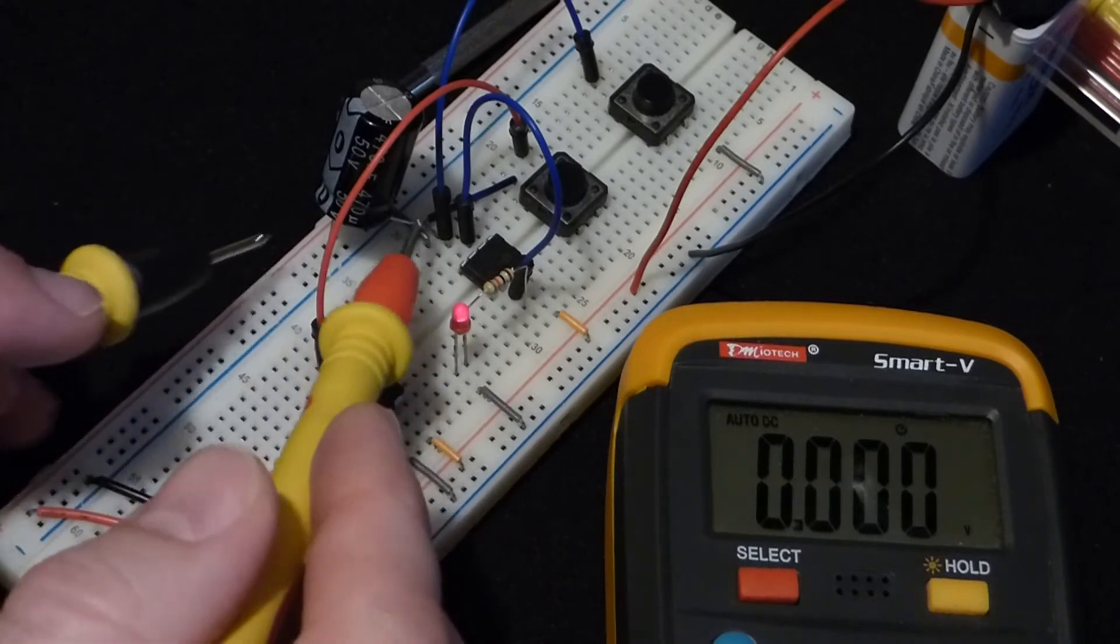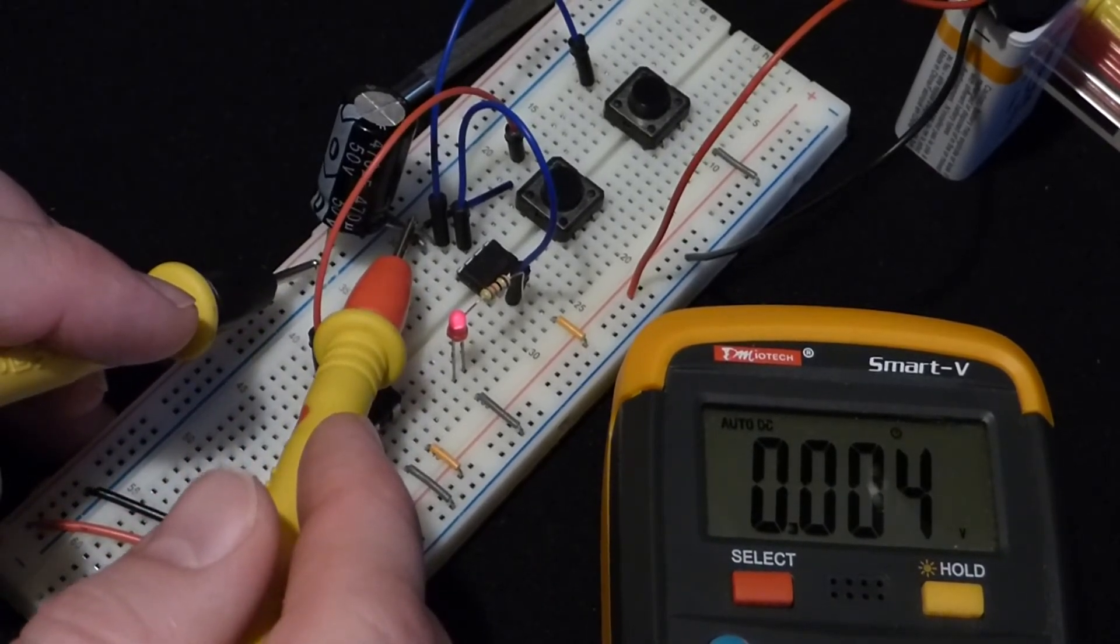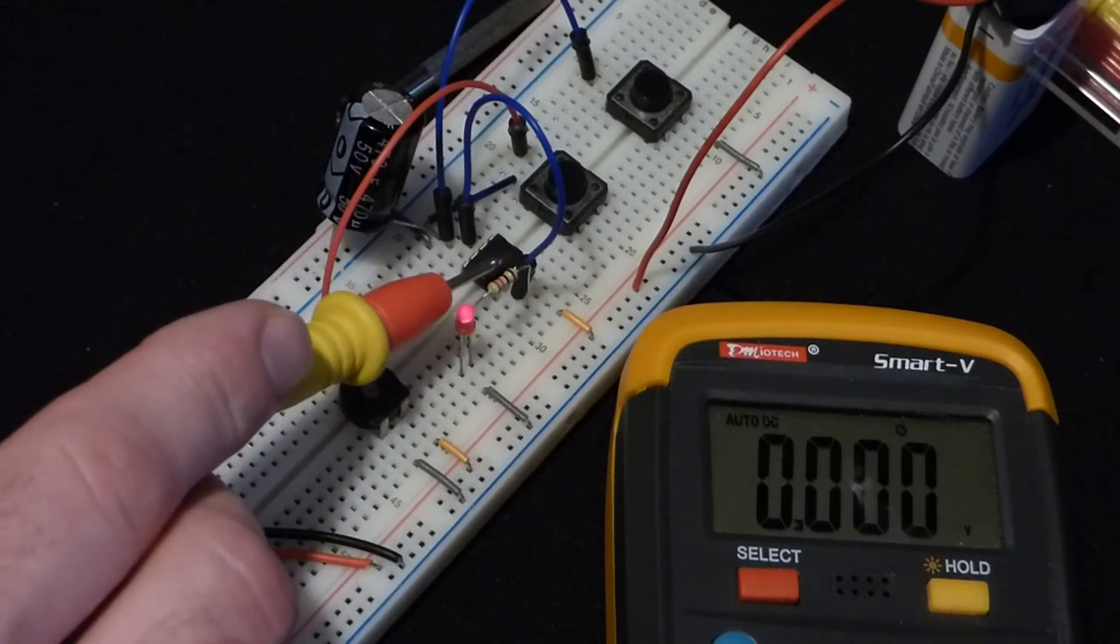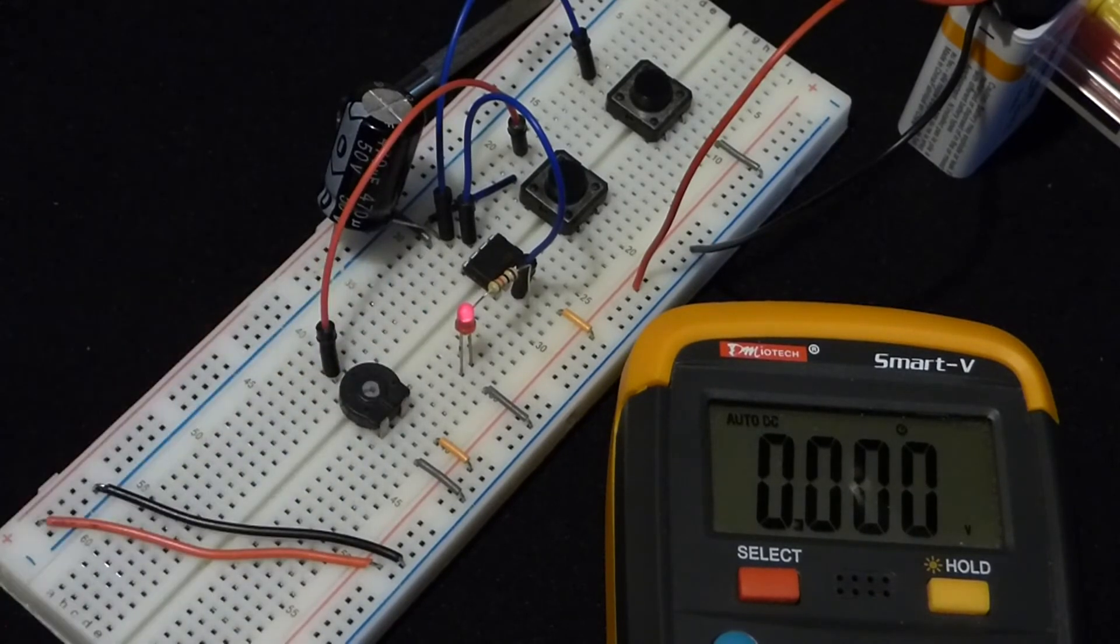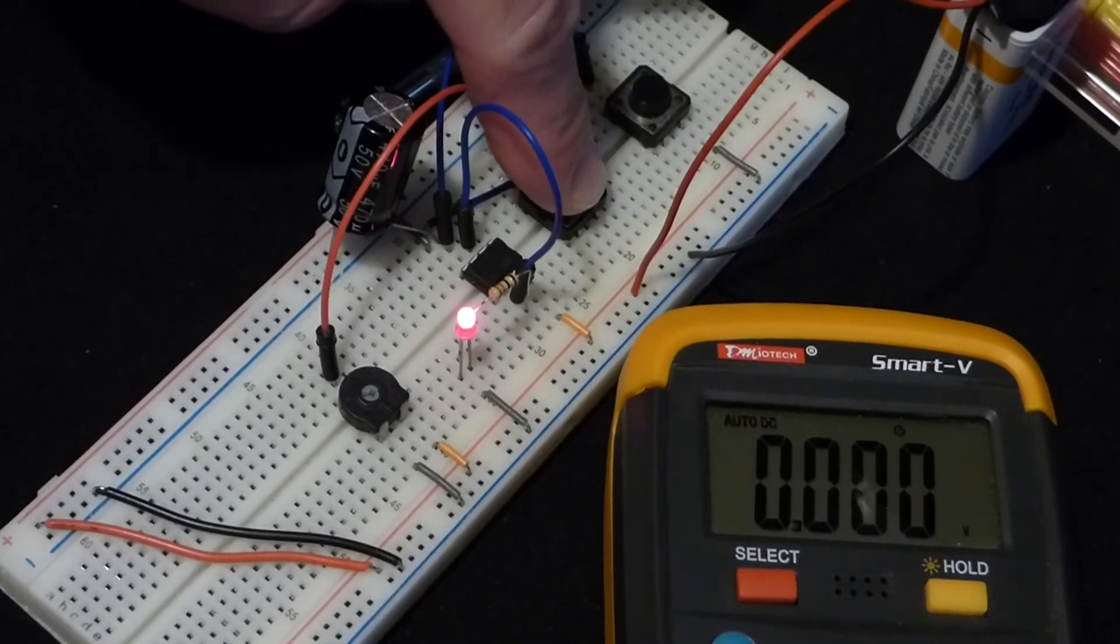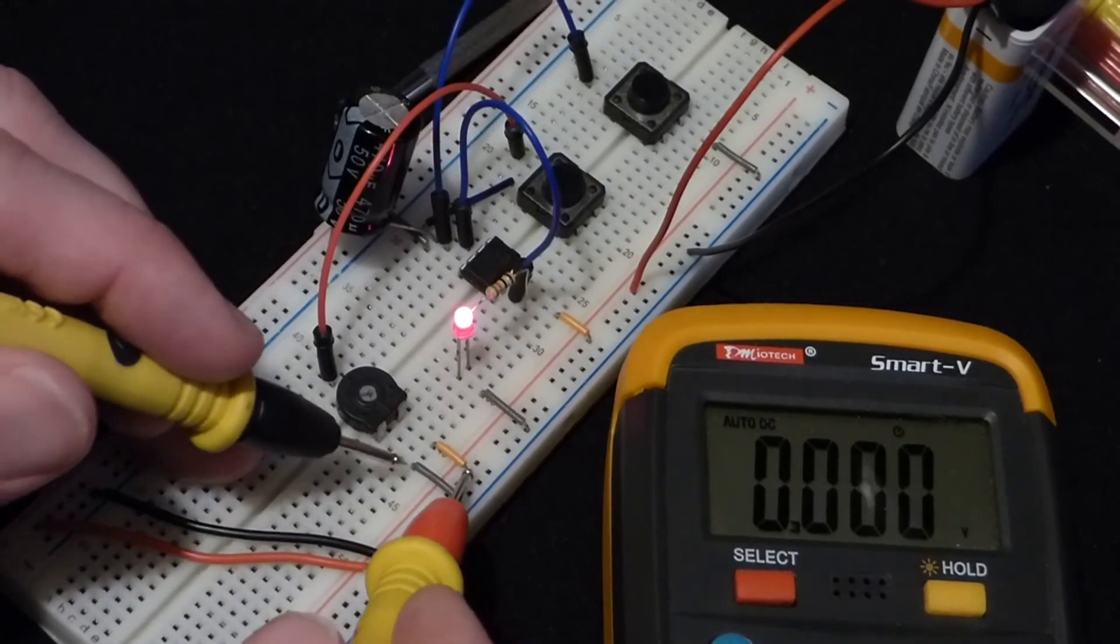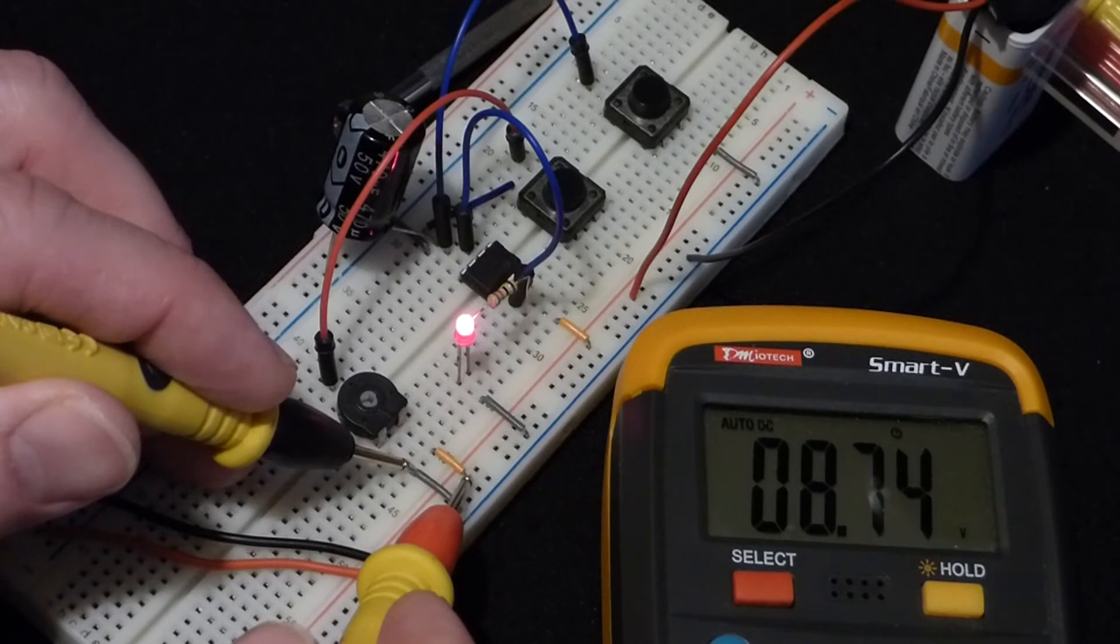Now, we'll measure the capacitor. I hit the discharge button a couple times. It's about 0 volts. And the output should be the same voltage as the non-inverting input voltage. And it's not doing that. It's about 2 volts off now. Now, I'll charge the capacitor to the battery voltage. The battery is actually about 8.74 volts, even though it's a 9-volt battery.